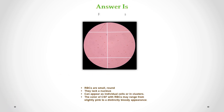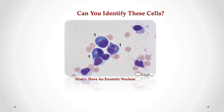Correct answer is red blood cells. We can see small and round cells — they lack a nucleus. They can appear as individual cells or in clusters. The color of CSF with RBCs may range from slightly pink to a distinctly bloody appearance.